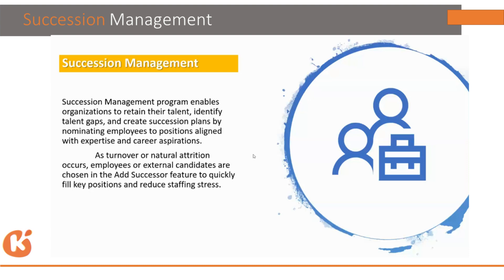For example, if we are targeting a manufacturing department and there are three or four critical positions like department head, we can define different criteria within succession planning to find the best employee to serve as a successor for that position. These capabilities are already available within succession planning.